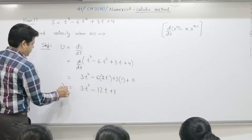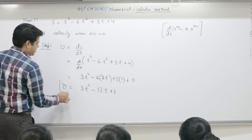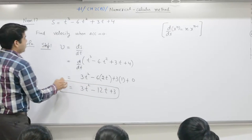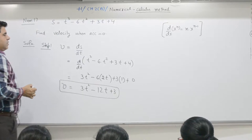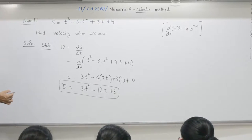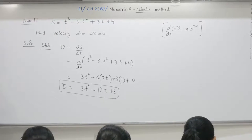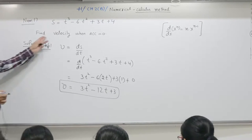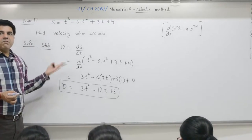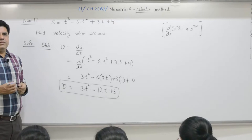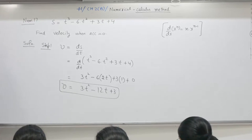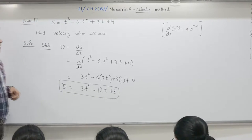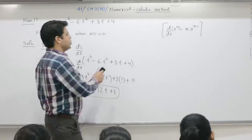So v = 3t² - 12t + 3. Step 2: the question asks for velocity when acceleration is 0, so we will have to find out acceleration also.